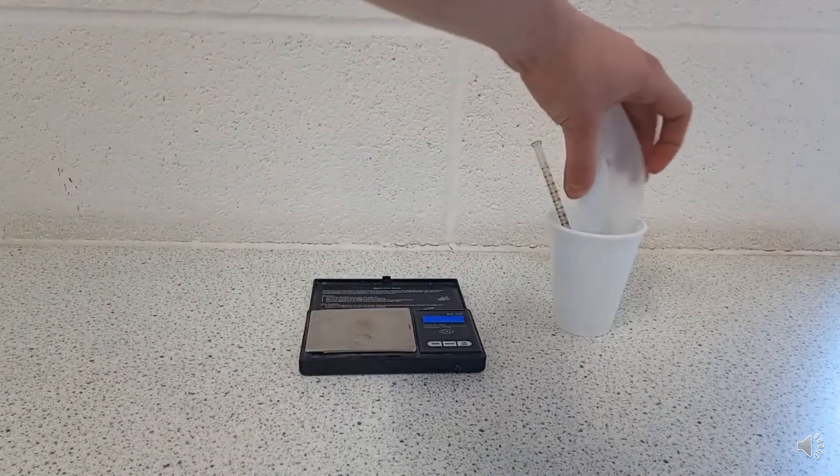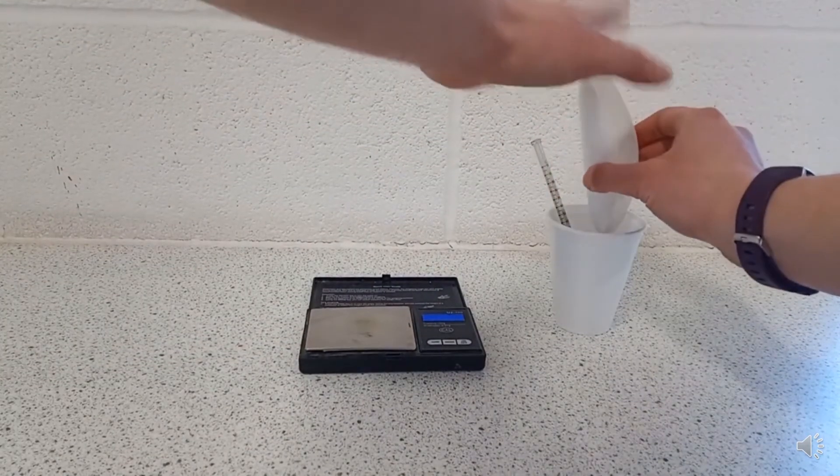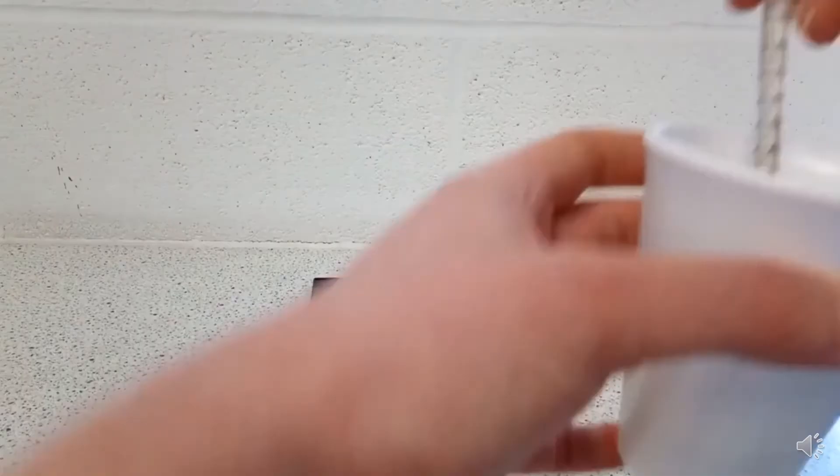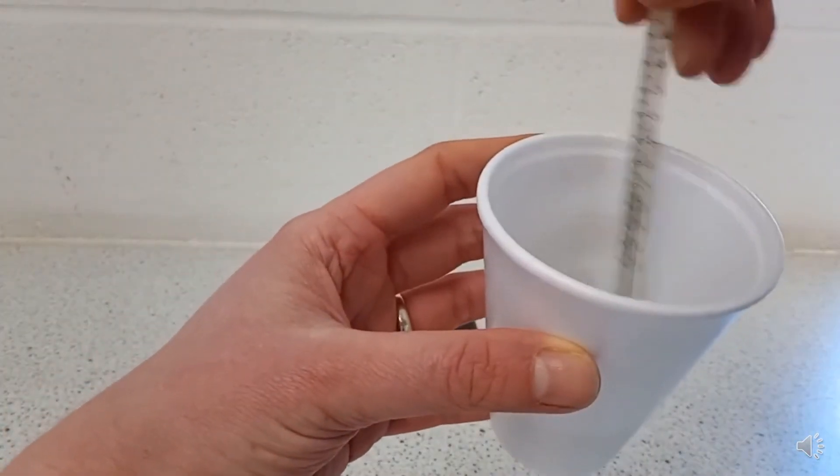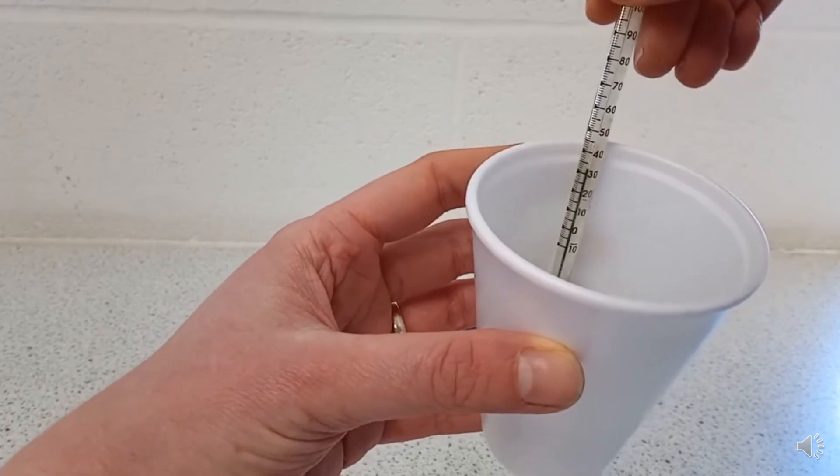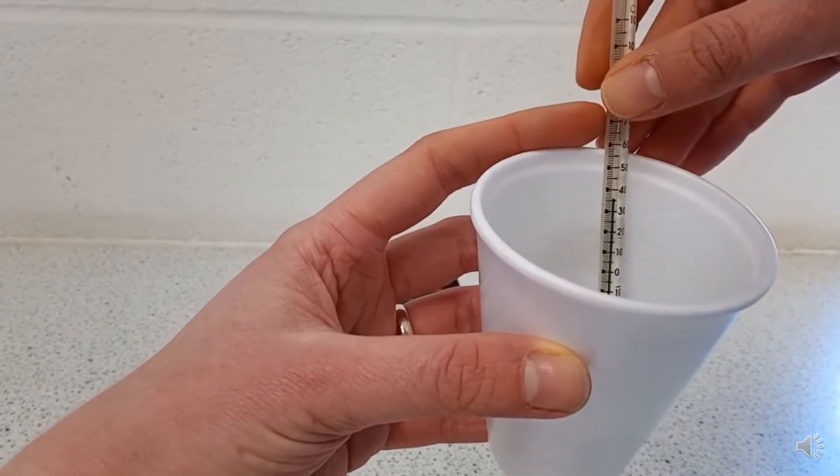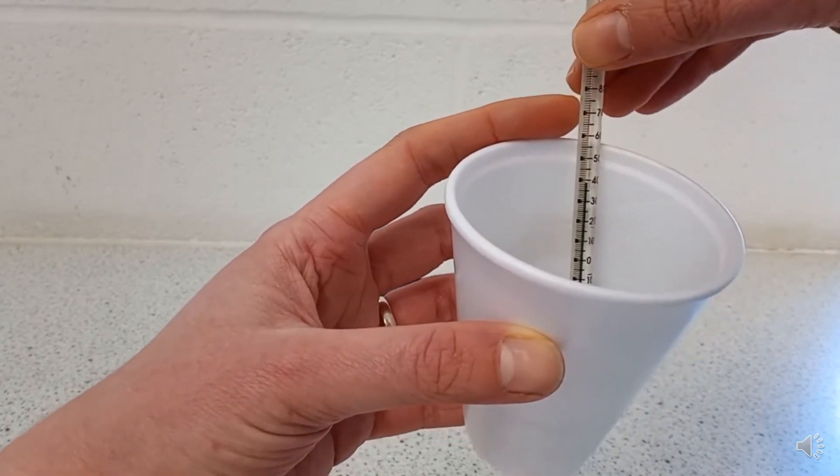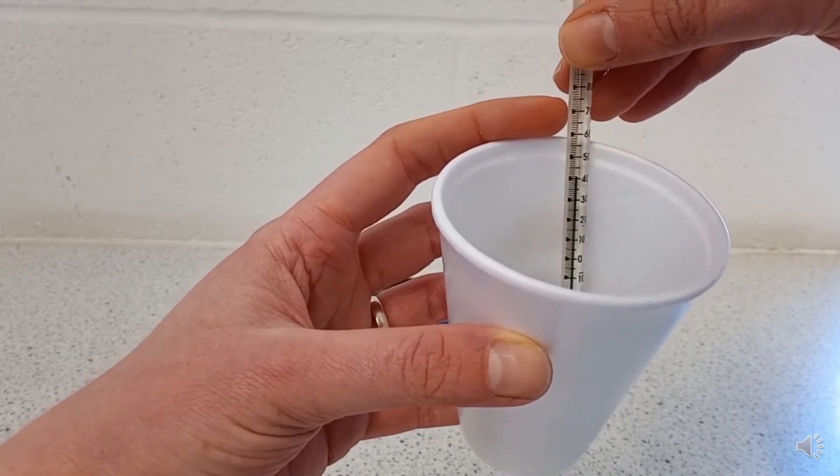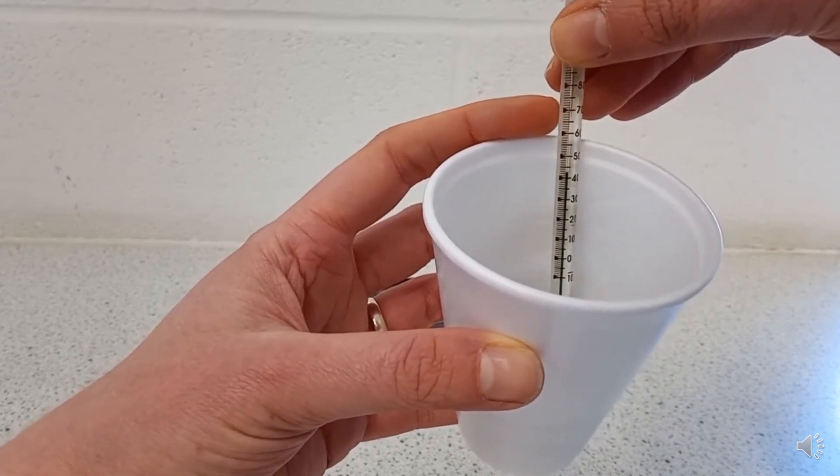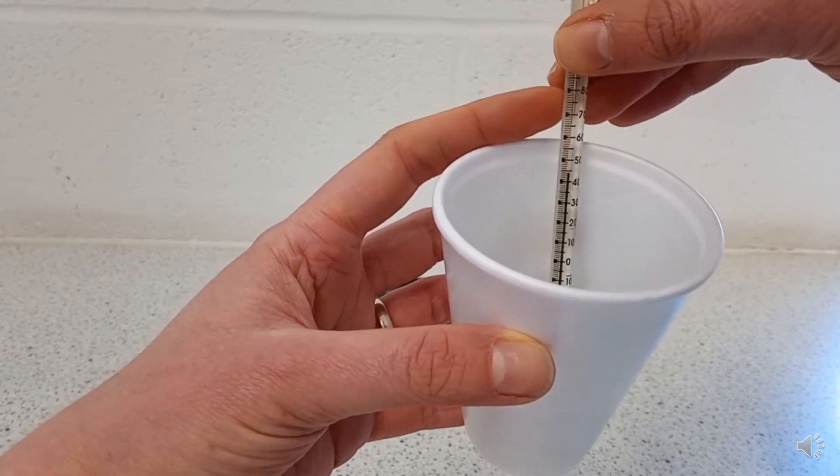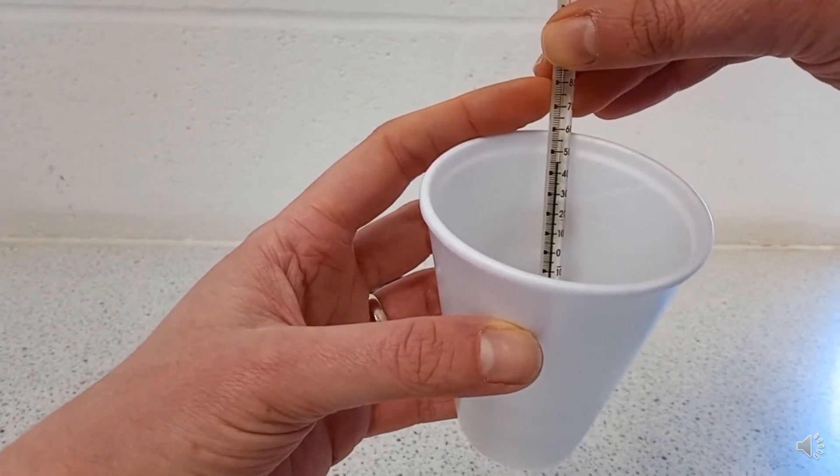And then I can add that in to my copper sulfate solution, tapping the weighing boat to make sure that it all gets in there. I give it a little bit of a stir to make sure that it's well mixed. And then I'm going to watch the temperature until it stops rising. And at the point that it reaches its highest temperature, that's what I'm going to record as my final temperature, and I'll use that to calculate the temperature change.